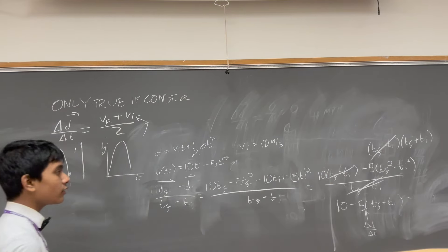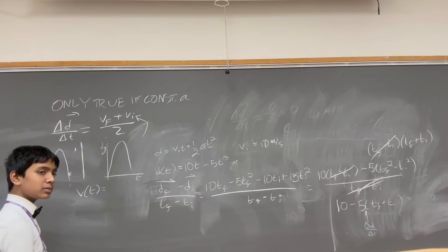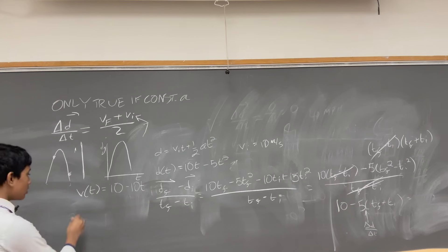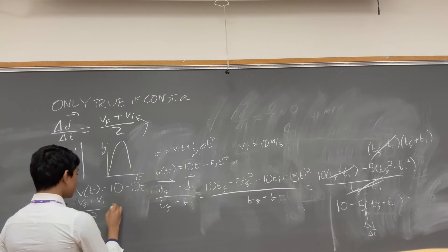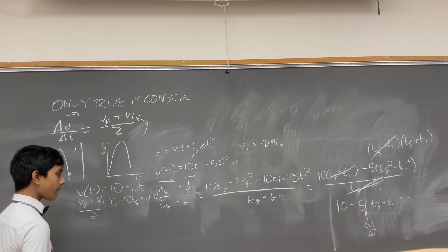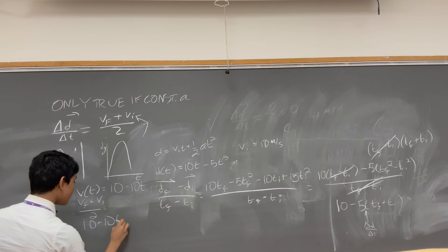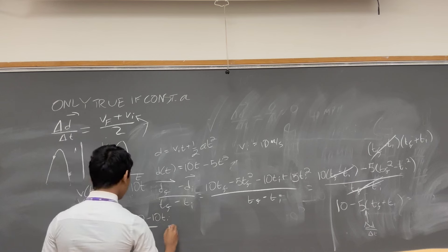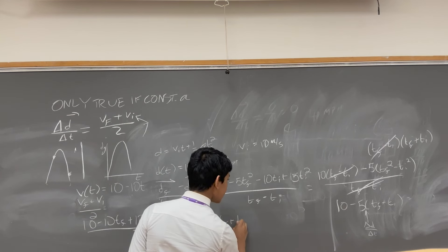Now, how do we find vf plus vi over 2? Well, what's the velocity function? Well, vt equals vi plus at. So, we have vi is 10 minus gt, which is 10t. So, that means that vf plus vi divided by 2 is equal to 10 minus 10tf plus 10 minus 10ti over 2. So, this combines to 20, and we get 10 minus 5 times tf plus ti.